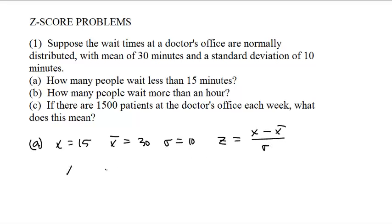x minus x-bar over sigma. That is, the z-score is 15 minus 30 over 10, which is negative 15 over 10. That's negative 1.5.